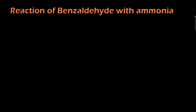In this video we are going to learn the reaction of benzaldehyde with ammonia. We are going to react three molecules of benzaldehyde with two molecules of ammonia. Let's write the reaction: C6H5-CH=O, this is benzaldehyde.